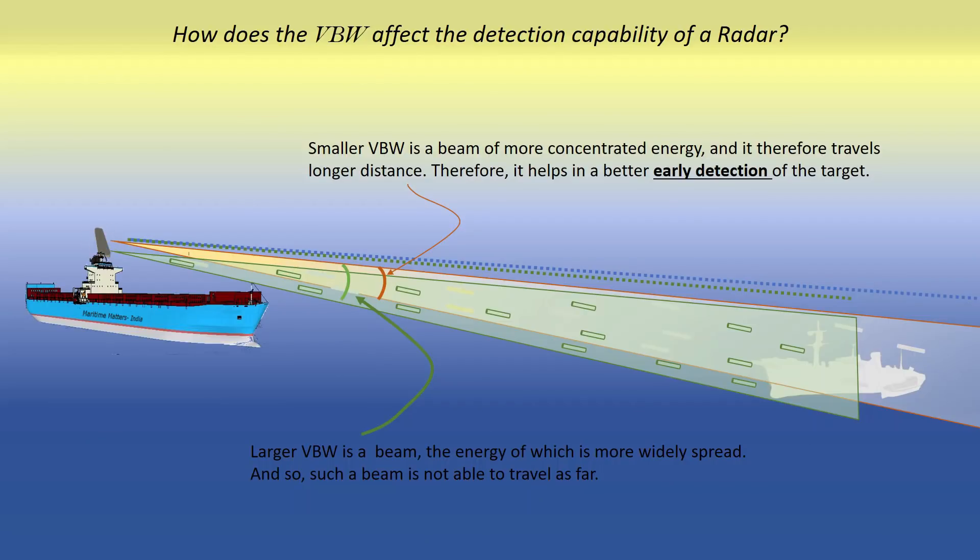How does the vertical beam width affect the detection capability of a radar? The vertical beam width has impact of the early detection of the target. The VBW governs the spread of energy within a beam.